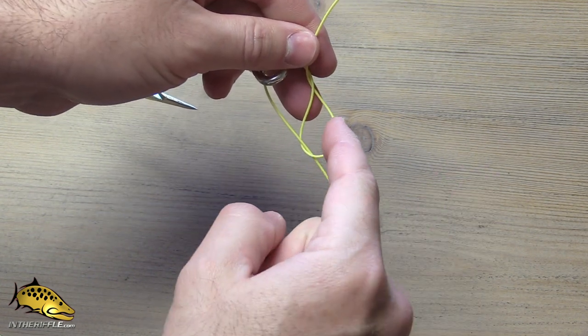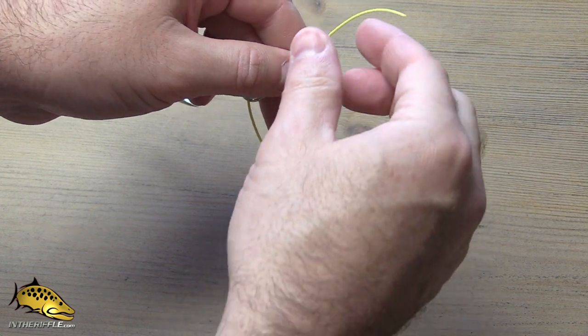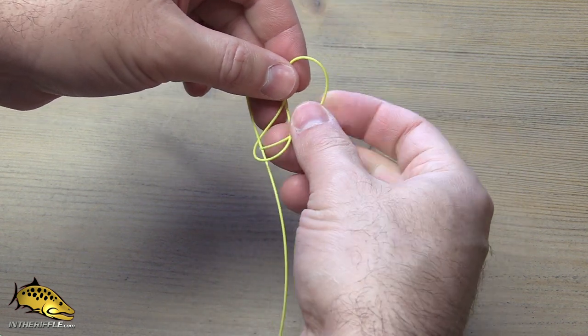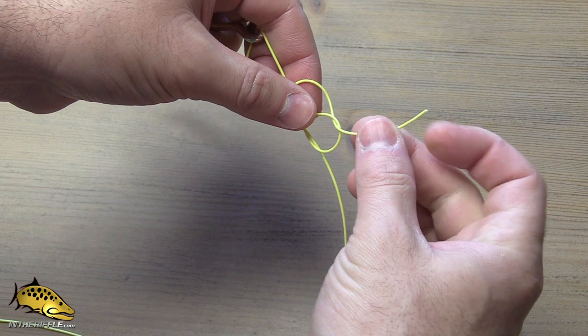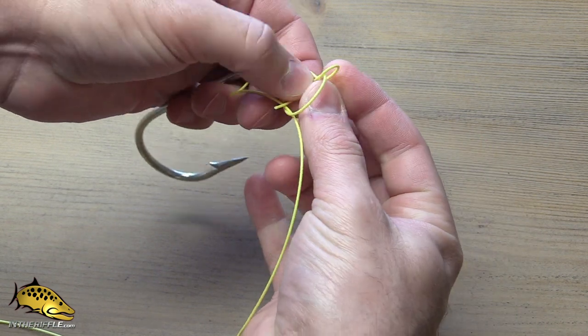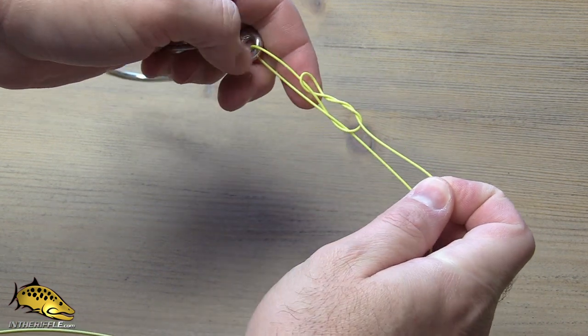Now the last step is to go through this loop twice. Come behind again, through the loop once, through the loop twice, and you're done. That's the Orvis knot.